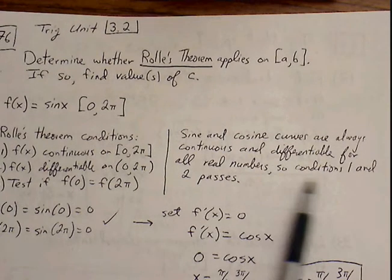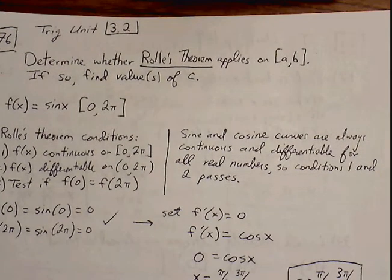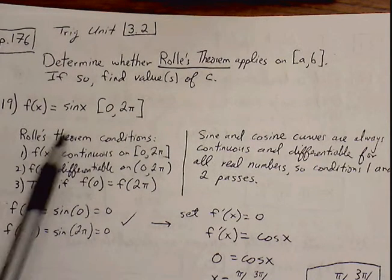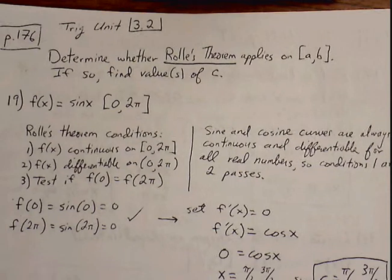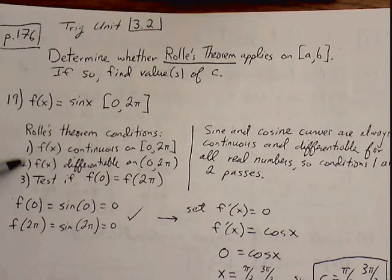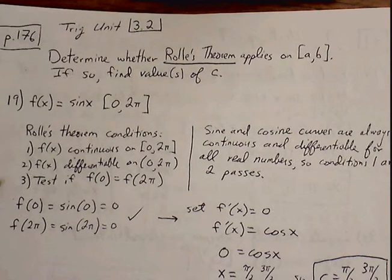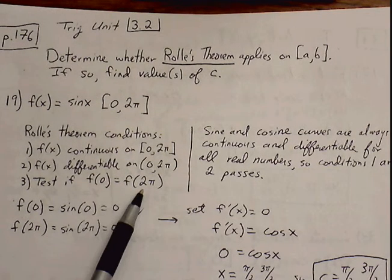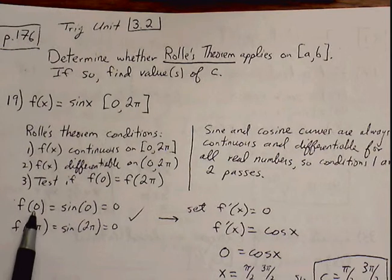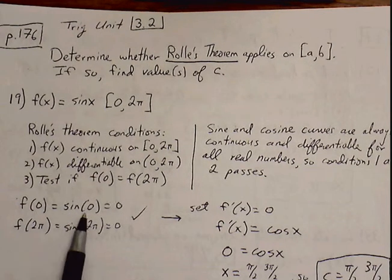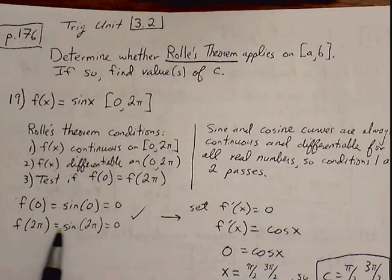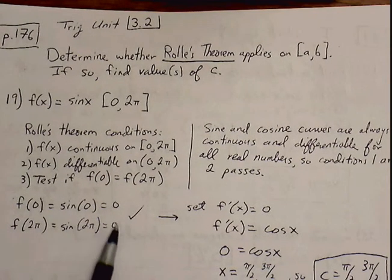We know that conditions 1 and 2 will pass. We're dealing with the sine function — it's always going to be continuous and always differentiable, so there are no sharp points. For the third condition, we test the endpoint y values. Plug 0 into the original function: sine of 0 is 0. Plug 2 pi into sine of x: sine of 2 pi is also 0. The y values are the same, so the third condition passes.